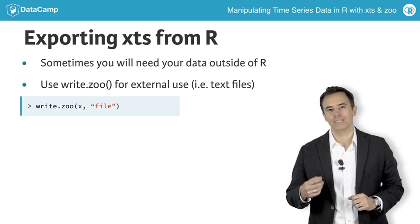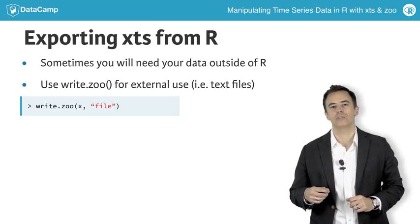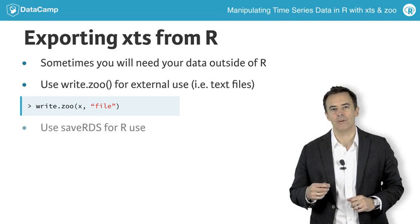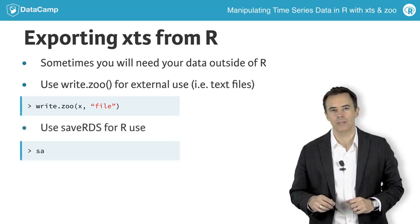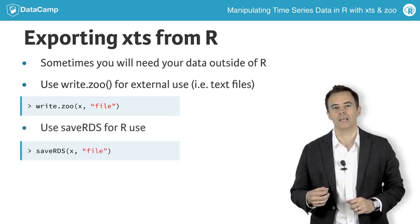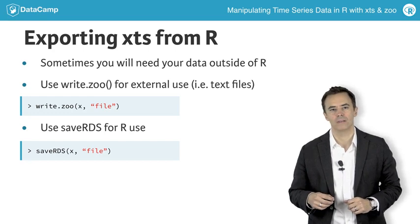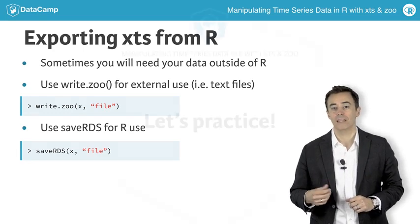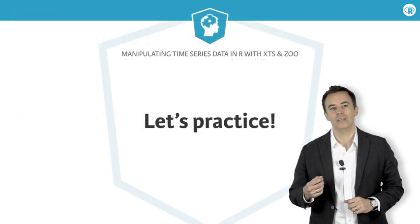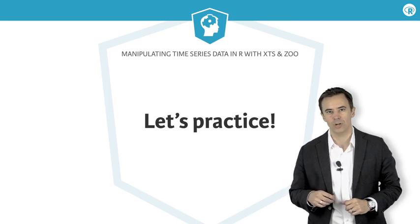If you are merely saving data for use in R later, I recommend you save it using the base saveRDS function. This is optimized for objects like XTS and makes it fast and efficient to read and write data to disk. Now that you've seen a bit of moving data into and out of XTS, let's give it a try.